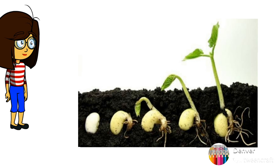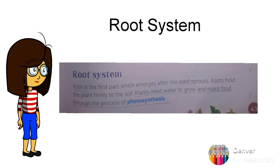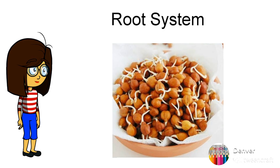Now let us talk about the root system. The root is the first part which emerges after the seed sprouts. Roots hold the plant firmly to the soil. Plants need water to grow and make food through the process of photosynthesis.